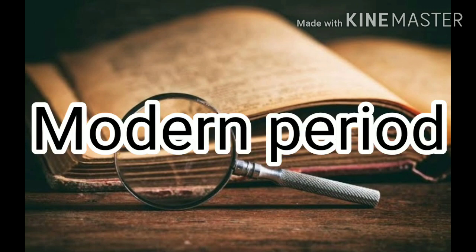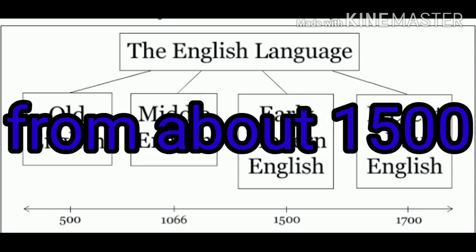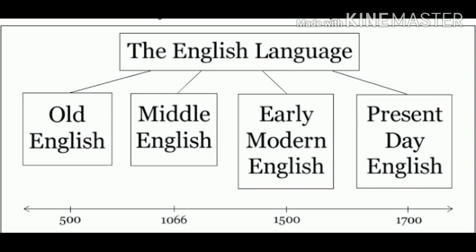The next period is the Modern Period. It begins from about 1500, around the end of the reign of Henry the Seventh. This period is further divided into Early Modern and Later Modern periods. The transition between early and later periods occurred considerably in the time of Henry the Eighth, which is believed to mark the emergence of the Modern English period. The Modern English period influenced English society greatly.